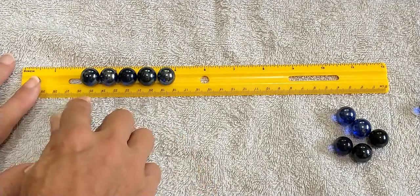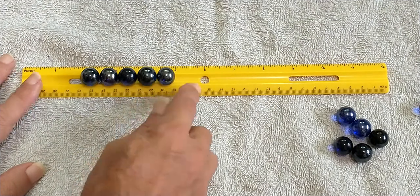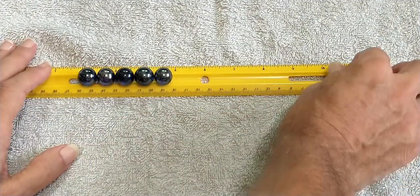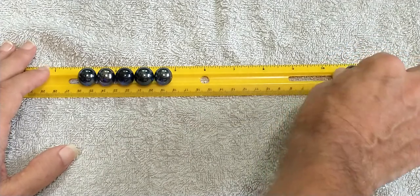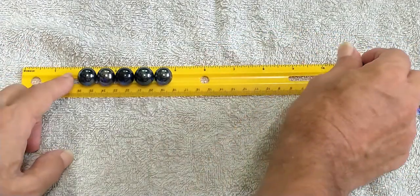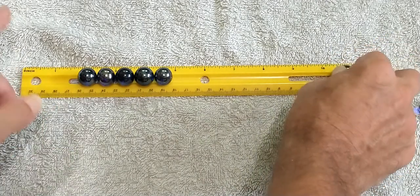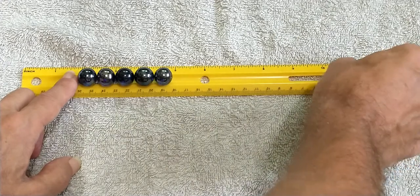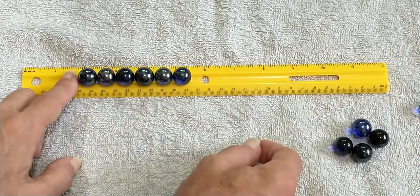In this exercise, set five marbles touching each other on a ruler. Take one marble and roll it into the five. Just roll it in. I'm gonna put my finger here so you won't see what will happen.